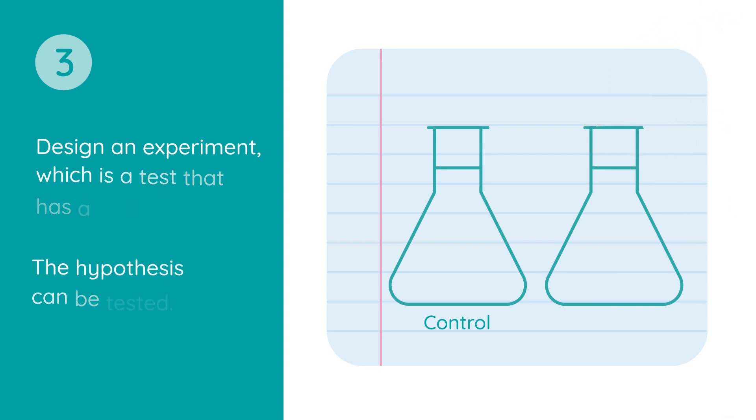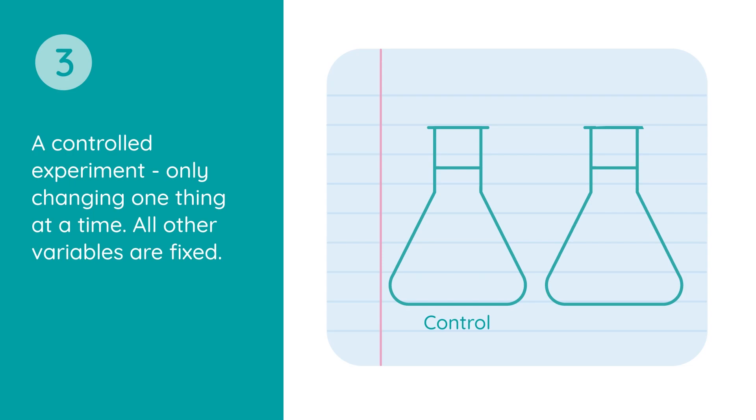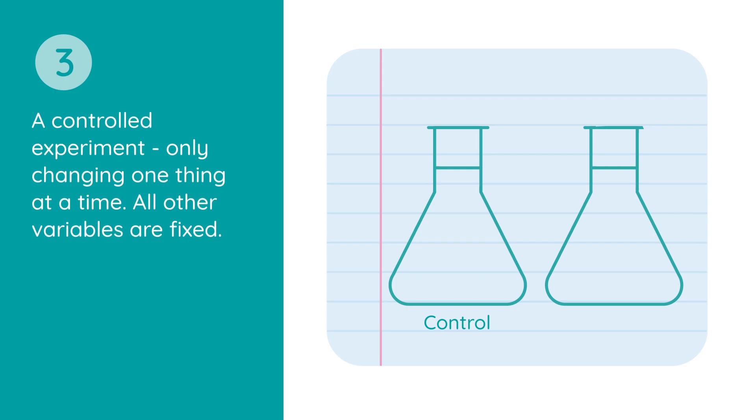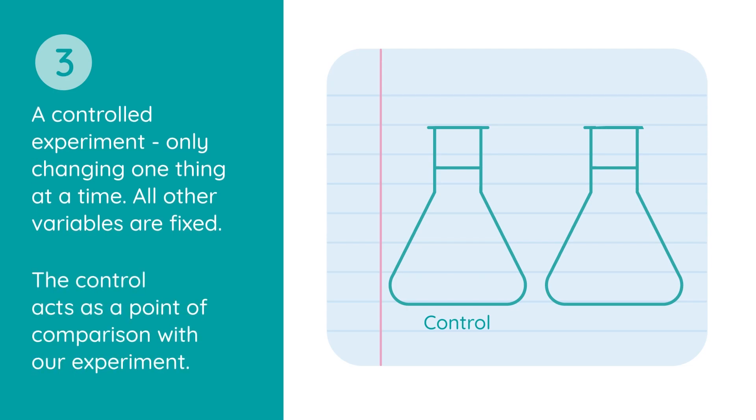The outcome must be measurable, and a controlled experiment means conducting the test and only changing one thing at a time. All other variables are fixed. The control acts as a point of comparison with our experiment.